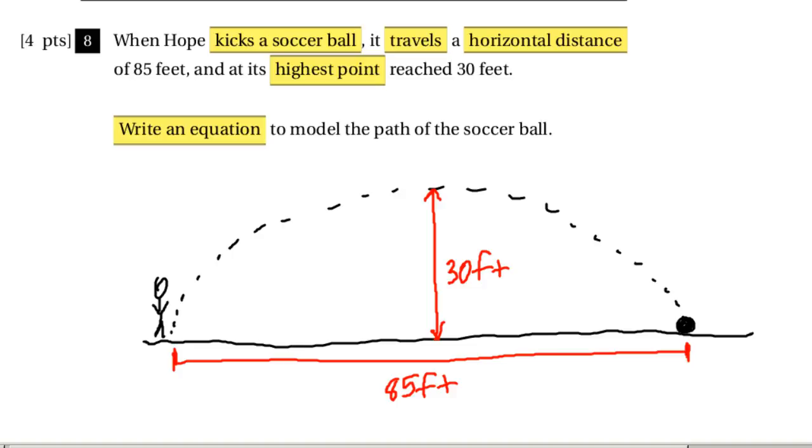So for our next problem, we're given that Hope kicks a soccer ball and it travels horizontally 85 feet and at its highest point it reaches 30 feet, and they want us to write an equation for this.